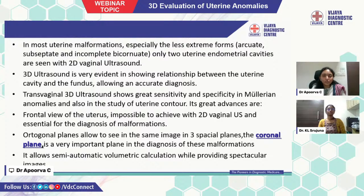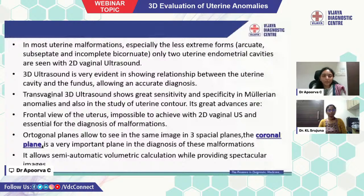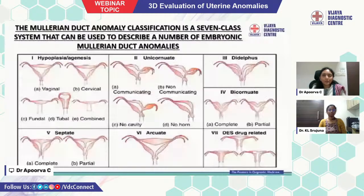Transvaginal 3D ultrasound shows great sensitivity and specificity in Mullerian anomalies and in the study of uterine contour. Its great advance is the frontal view of the uterus, impossible to achieve with 2D vaginal ultrasound, and essential for diagnosis of malformations. Orthogonal planes allow seeing the same image in three spatial planes. The coronal plane is a very important plane in the diagnosis of these malformations, allowing semi-automatic volumetric calculation while providing spectacular images. The Mullerian duct anomaly classification is a 7-class system.